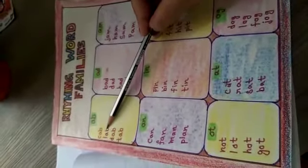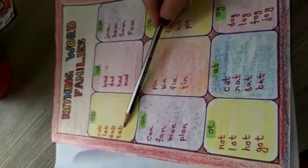See, ab family: cab, lab, dab, tab. So the last two sounds are ab, so it comes under ab family.